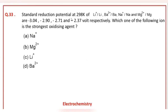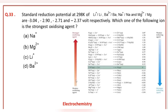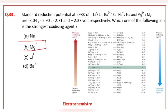Standard reduction potential at 298 Kelvin of lithium, barium, sodium, and magnesium are given. Which of the following ions is the strongest oxidizing agent? The correct answer option of this question is B, that is magnesium.